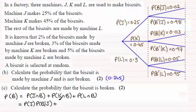For K and B, coming from machine K and broken, this will be the probability that it's manufactured in machine K times the probability that it's broken given that it came from machine K.